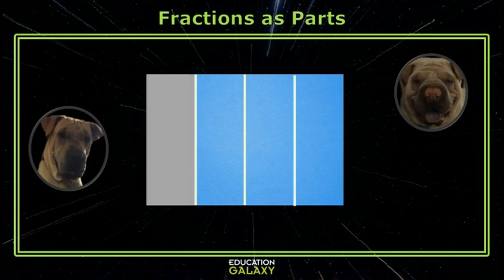To represent the shaded part, Molly, I say that we have four equal-sized pieces, so that's the denominator, and one piece is shaded gray. It's one unit out of four total, so this is called a unit fraction.